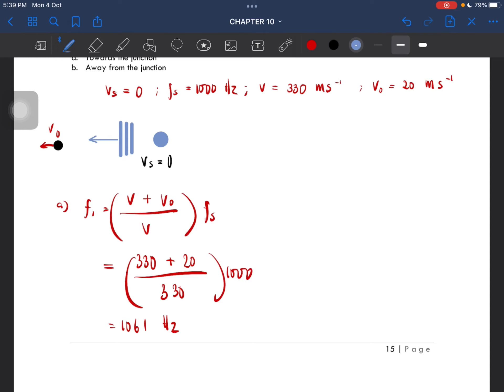This is the same direction with the observer, so f is equal to v minus v naught over v times fs. So this is just changing into negative. So that's what's going to do. With 1000 you get 939, actually I'm gonna round it off, 940.